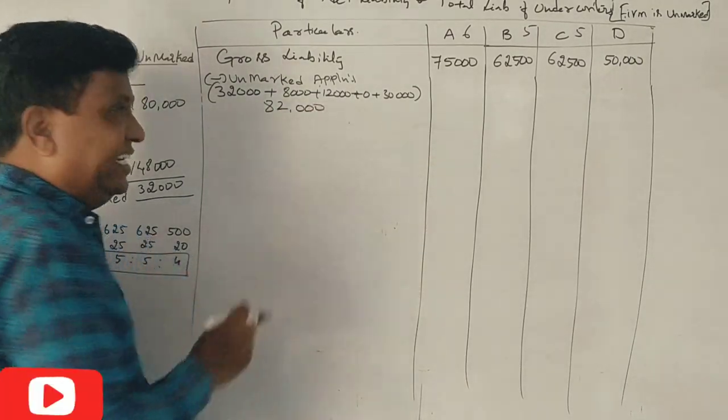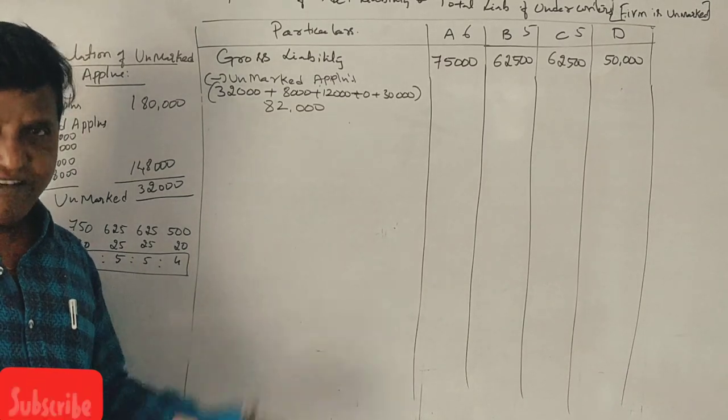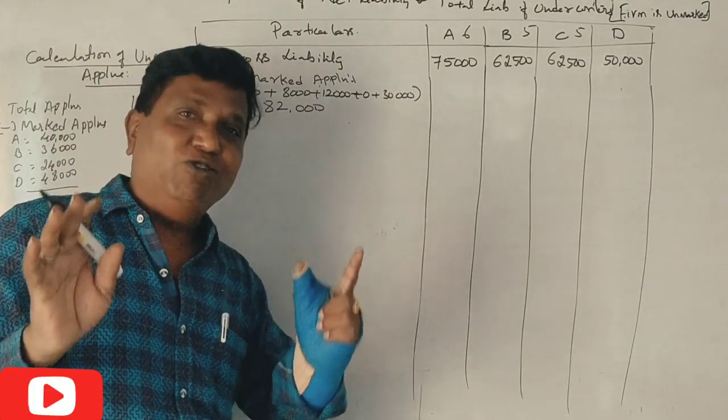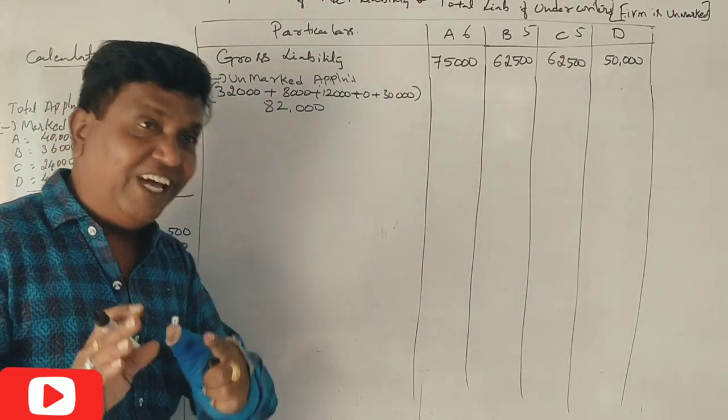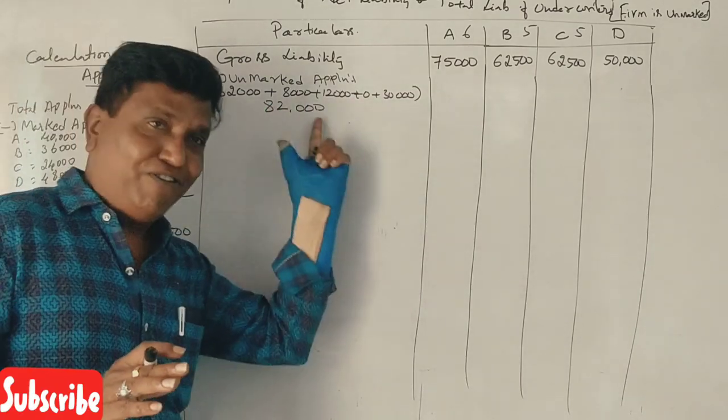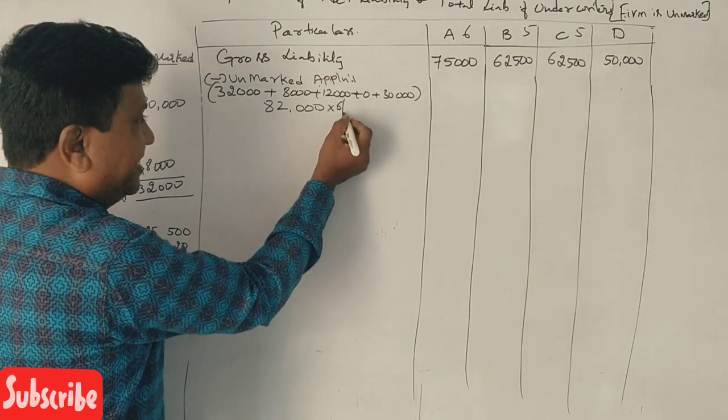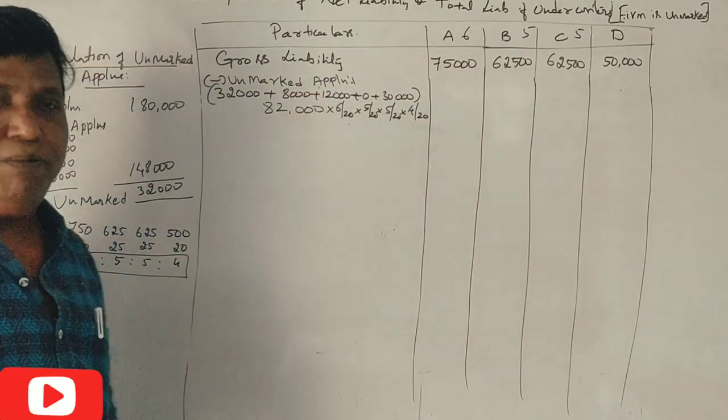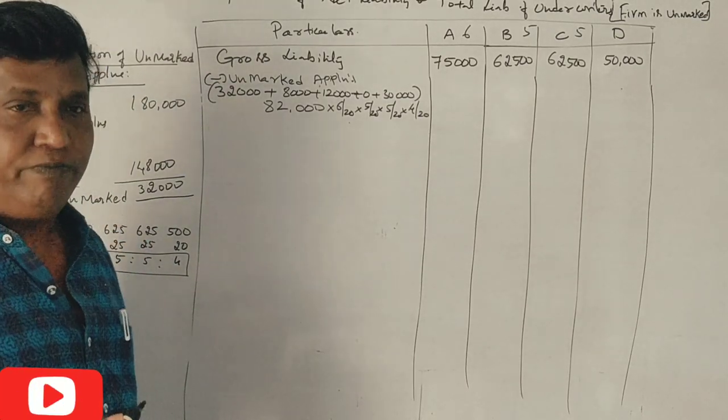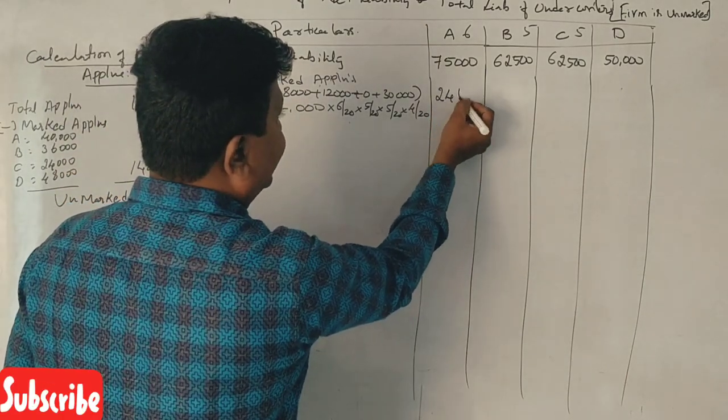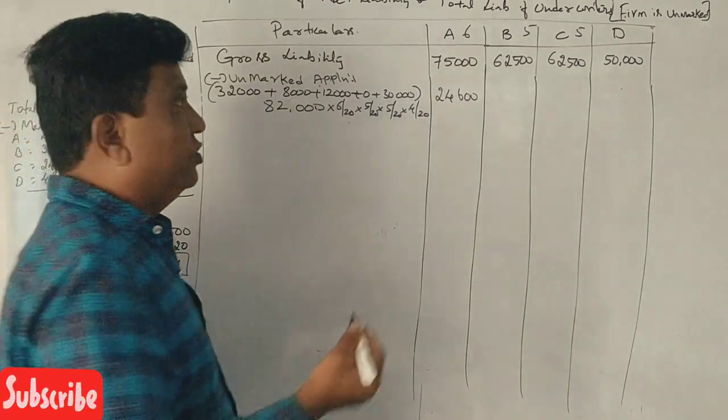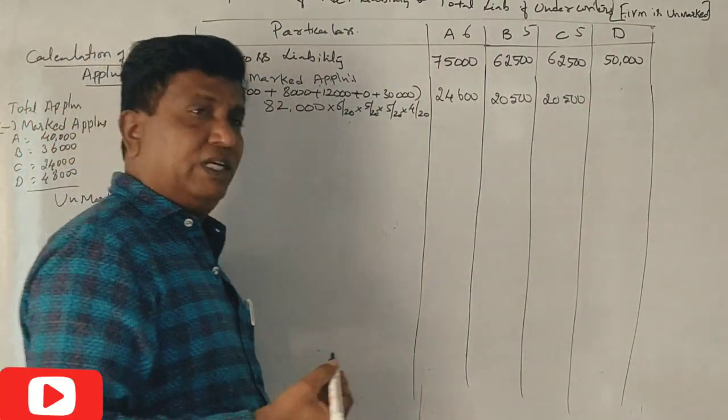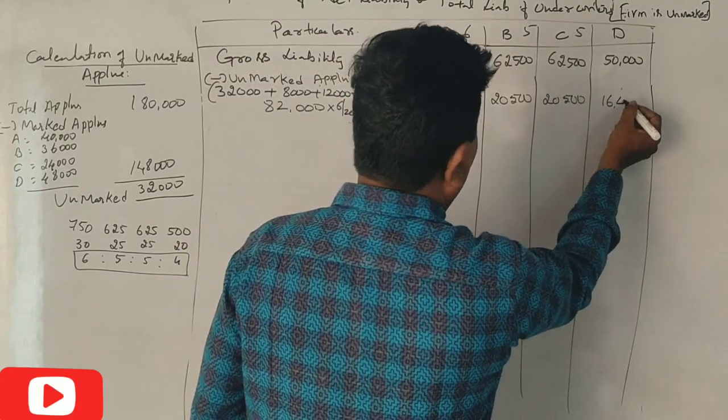How far will it be called the firm underwriting? Correct? What's the firm underwriting? If the firm underwriting is called, unmarked and add: $82,000, 6 by 20, 5 by 20, 5 by 20, 4 by 20 divide. 24,600, 24,600, 25,500. Last of the 16,400, 16,400. Okay.